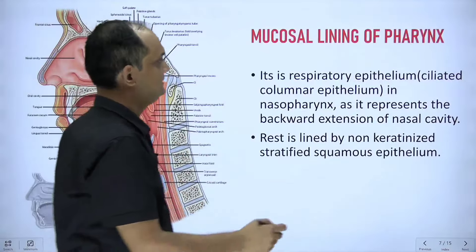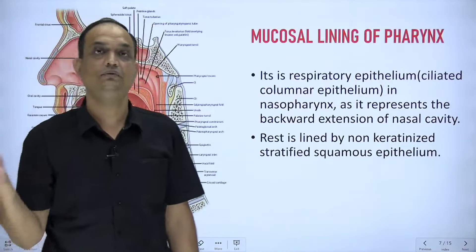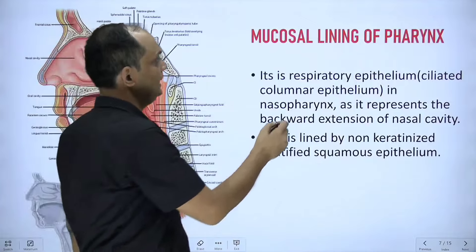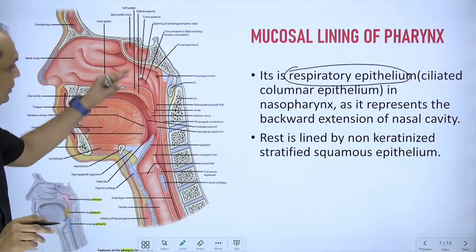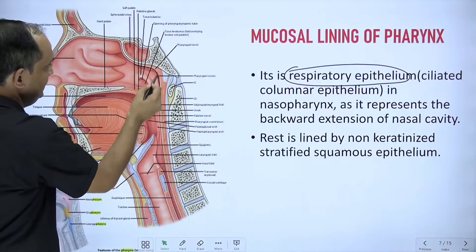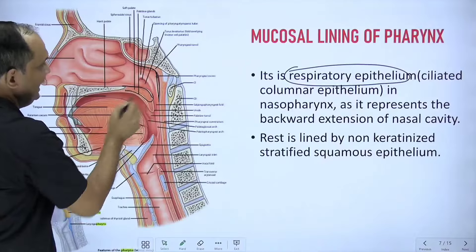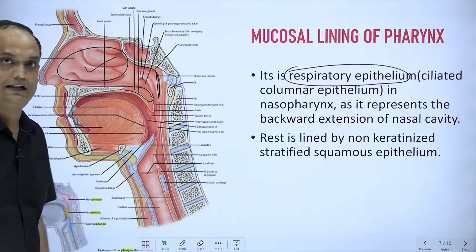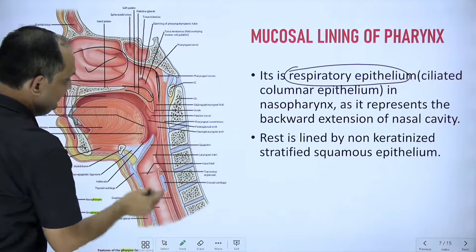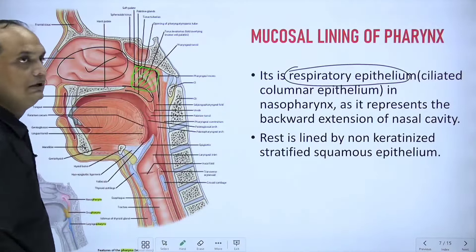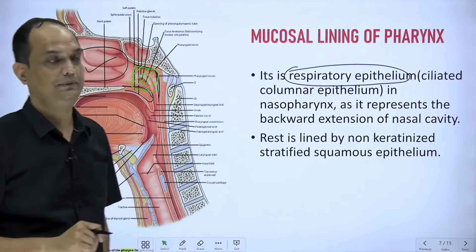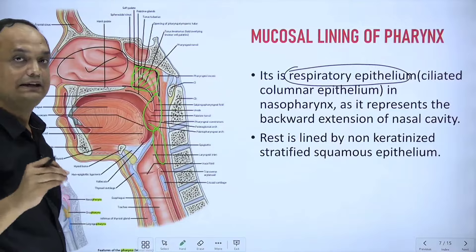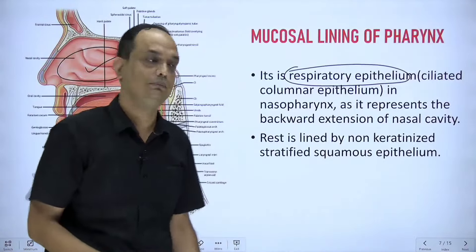The first layer is the mucosa, which is non-keratinized stratified squamous in major part. Only in the nasopharynx do you have respiratory epithelium. When you see the whole pharynx, the nasopharynx — which is above the soft palate — is actually the posterior extension of the nasal cavity itself. Because of this, the lining epithelium of this area is the ciliated respiratory epithelium. The remaining parts, oropharynx and laryngopharynx, have non-keratinized stratified squamous epithelium.